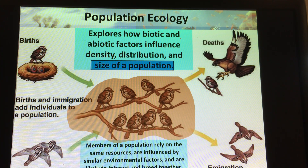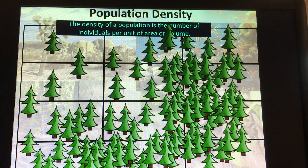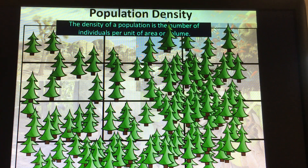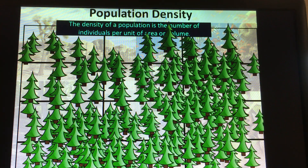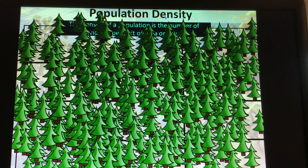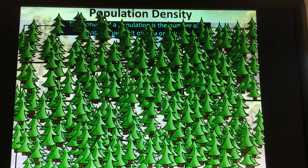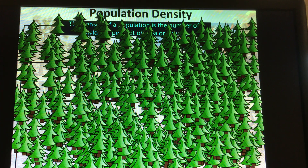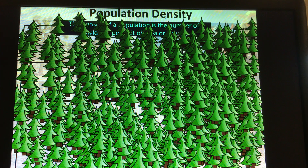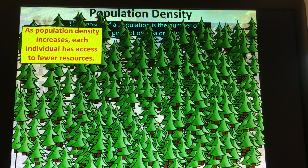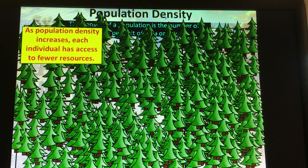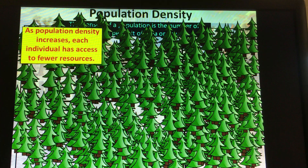When we look at population ecology, we can see when we talk about population density, populations as they get more and more dense, there are going to be things that limit how big the population can become. As the population grows and increases, the amount of resources available stays constant. So as you increase members of the population, there is going to be more and more competition because there are fewer resources per individual.